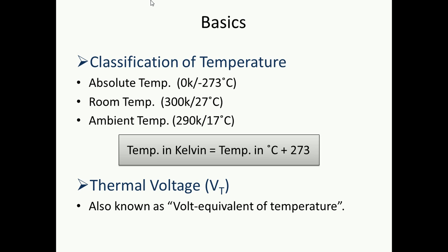Second is room temperature. Room temperature varies from time to time, or place to place — seasonal changes and environmental conditions affect your room temperature. It is 300 Kelvin or 27 degree Celsius. Third is ambient temperature. Ambient means surrounding, so ambient temperature is your surrounding temperature and it is 290 Kelvin or 17 degree Celsius.